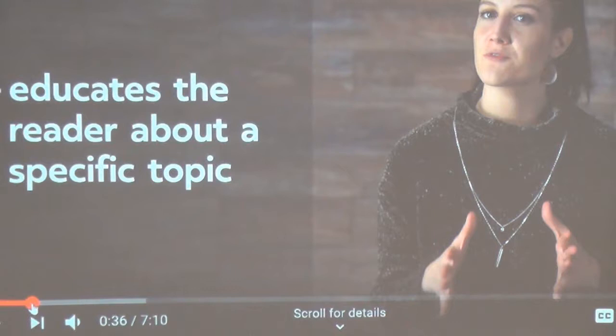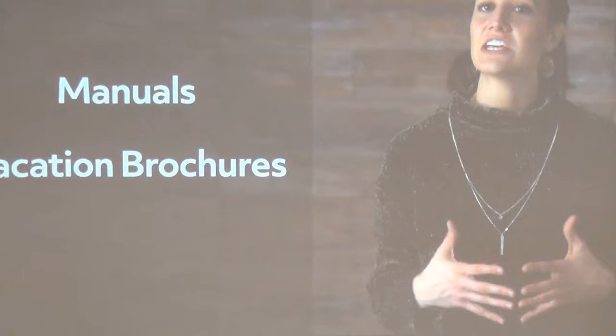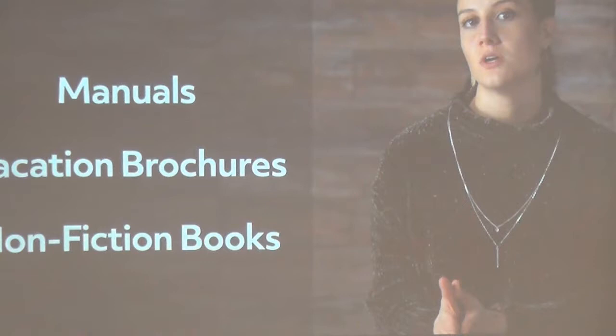You'll see informative text in a number of different mediums: a manual with instructions for putting together a desk, a book providing information on a vacation to a specific place, a non-fiction book that examines World War II — all are examples of informative texts. Informative texts can also appear in newspapers, textbooks, reference materials, and research papers.